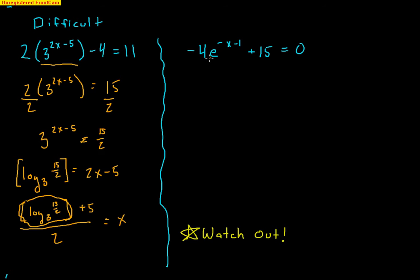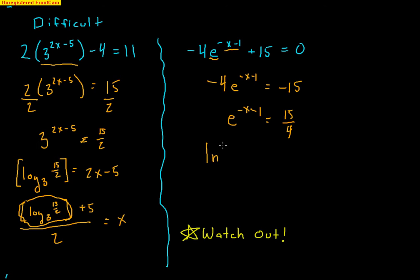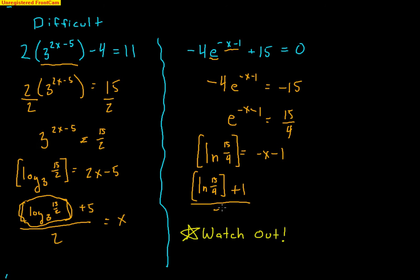Here's one more. The exponential part is e^(−x−1), so I need some solving first. Subtract 11 to get −4e^(−x−1) = −15, then divide both sides by −4 to get e^(−x−1) = 15/4. Apply the natural log: ln(15/4) = −x − 1. Add 1 and divide by −1: x = −(ln(15/4) + 1) — the negative runs through, so the plus 1 becomes minus 1.